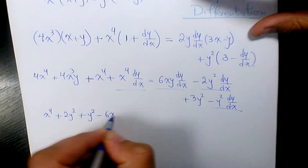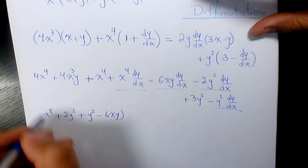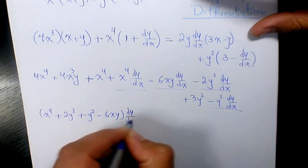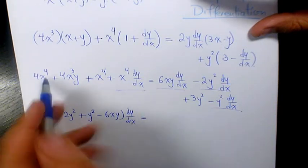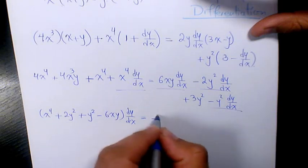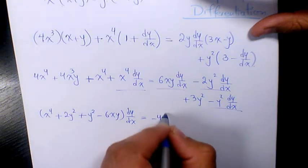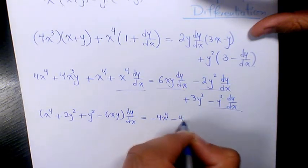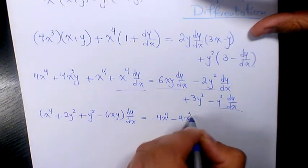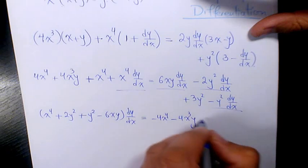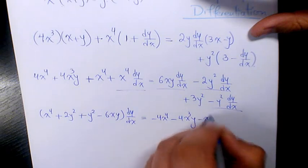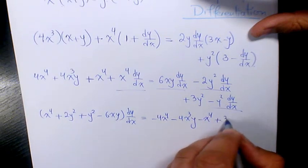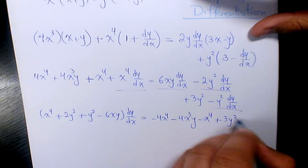...minus 6xy times dy over dx equals negative 4x to the power of 4 minus 4x cubed y minus x to the power of 4 plus 3y squared.